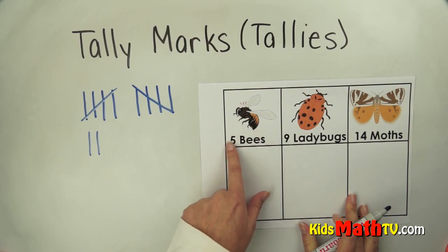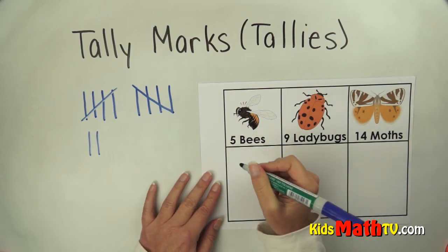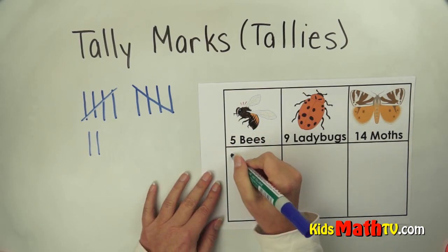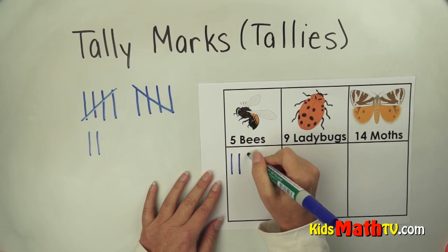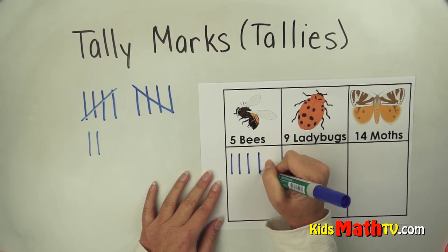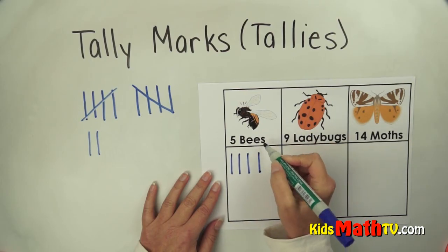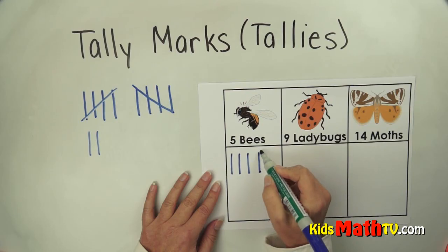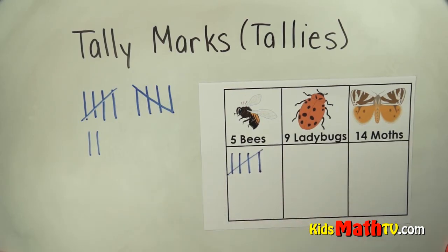If there were five B's, we're going to tally: one, two, three, four. I got to four, so now my fifth one — the fifth B — I'm going to cross. So that gives us five B's.